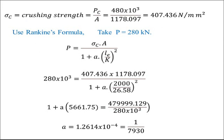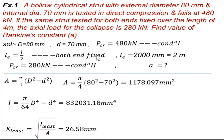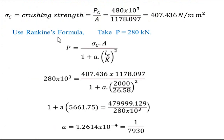The problem asks us to find Rankine's constant. We use Rankine's formula: P = (sigma_c × A) / (1 + a × (Le/k)²), where Le is the effective length, k is the least radius of gyration, sigma_c is the crushing strength, A is the cross-section area, and small a is Rankine's constant — the only unknown in this formula.